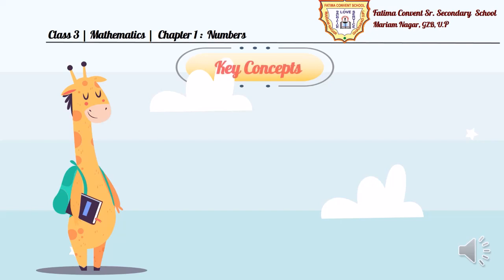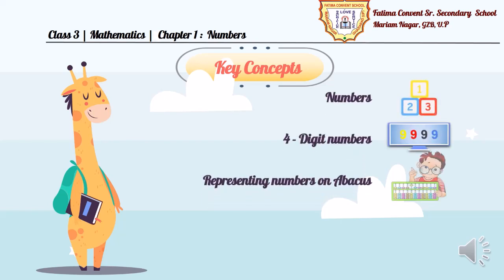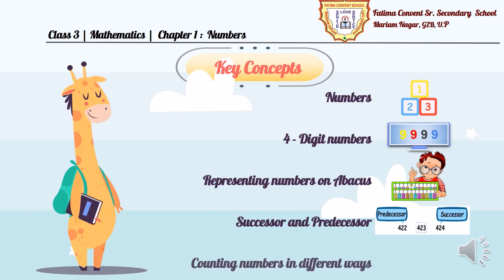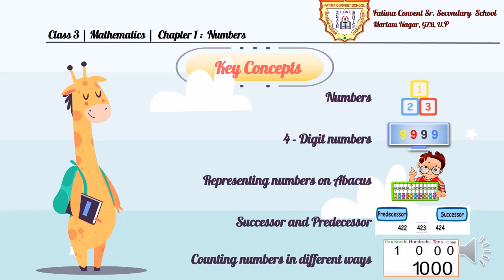Children, we are going to learn the following key concepts: Numbers, 4-digit numbers, Representing numbers on abacus, Successor and predecessor, and Counting numbers in different ways.